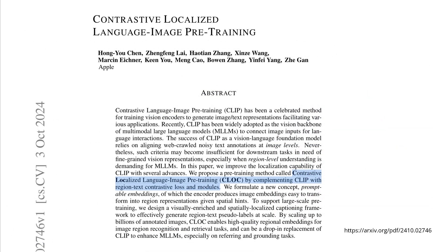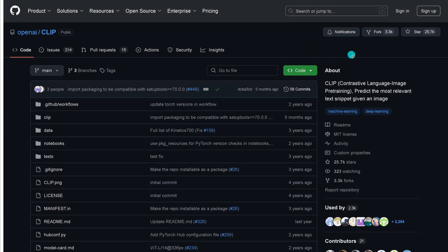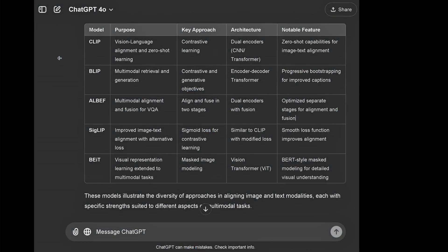Just to show that CLIP as a basis is really popular — although it's three years old, the latest research from Apple in early October 2024 still builds on CLIP. They propose a new pre-training methodology: contrastive localized language-image pre-training, complementing CLIP with region-text contrastive loss and modules. So CLIP is still there and people are building on it for advanced models. These models are really our workhorses, and Stanford and MIT also use them as the base models.